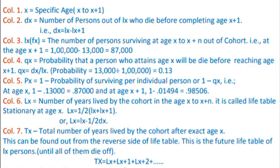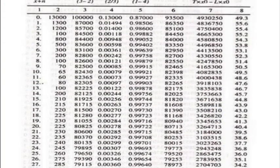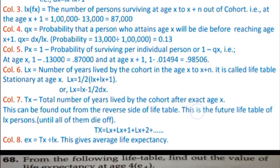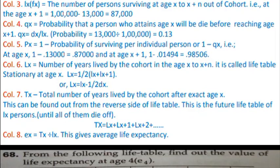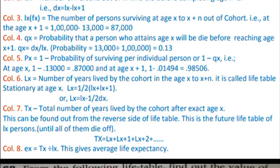qx is in probability terms — the probability that a person who attains age x will die before reaching age x+1. To calculate qx, we divide dx by lx (or fx). Here dx represents favorable cases and lx represents total cases. px is the opposite of qx — it is 1 minus qx, the probability of surviving.